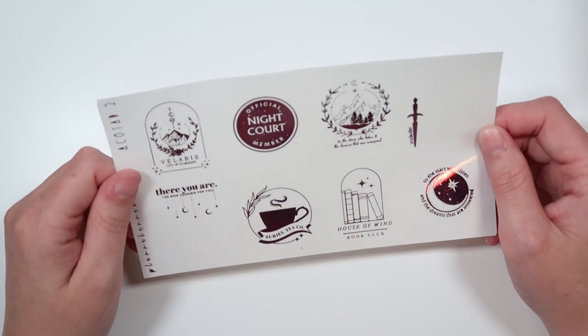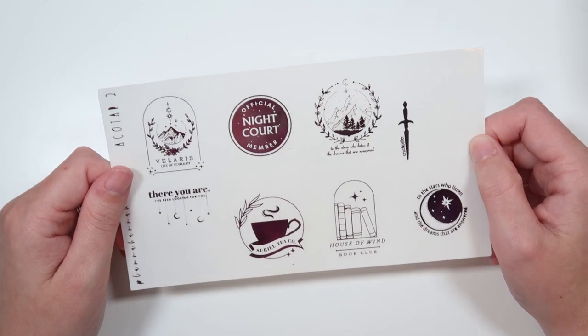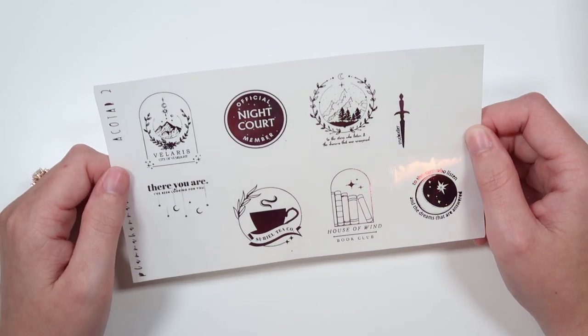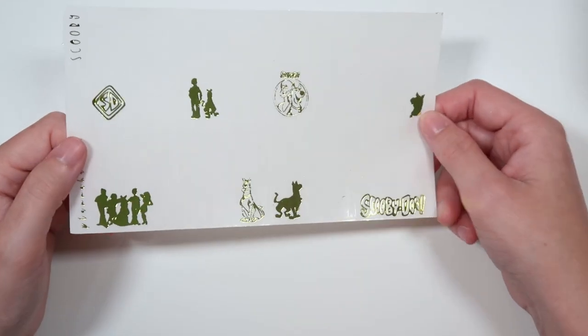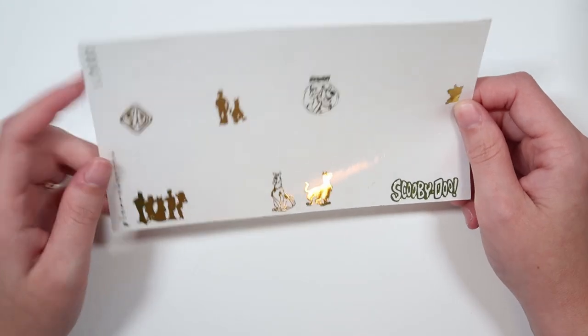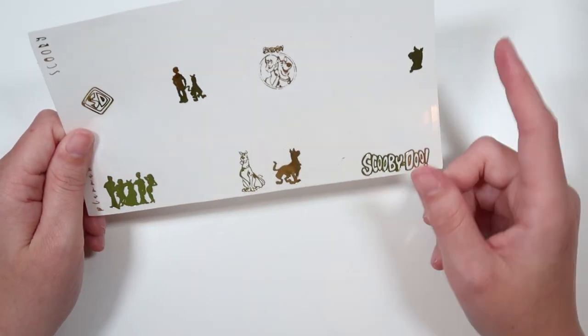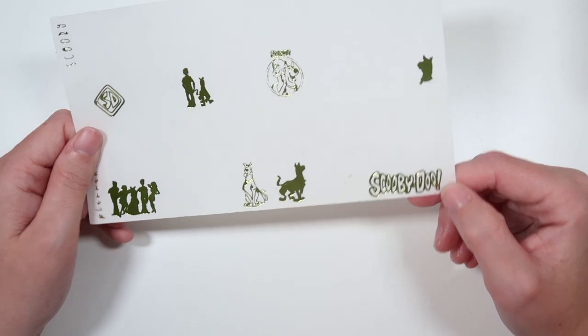And then we have the ACOTAR 2 overlays which are being shown in purple tie-dye. Official Nightcourt member. There you are, I've been looking for you. So a bunch of different cutie overlays. And then we do also have Scooby-Doo overlays here. We've got like the Scooby-Doo tag, a couple of filled-in silhouettes, some lined silhouettes, and then the Scooby-Doo. And this is being shown in lemongrass.